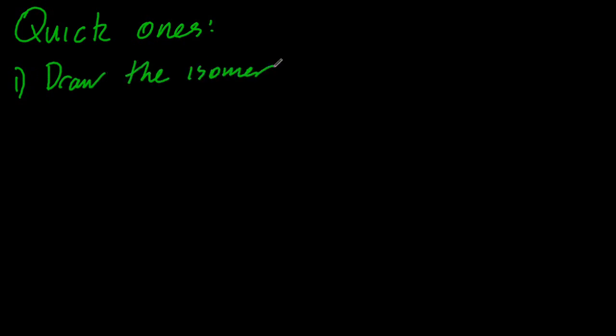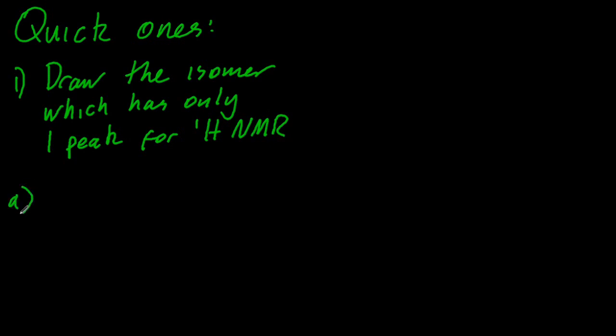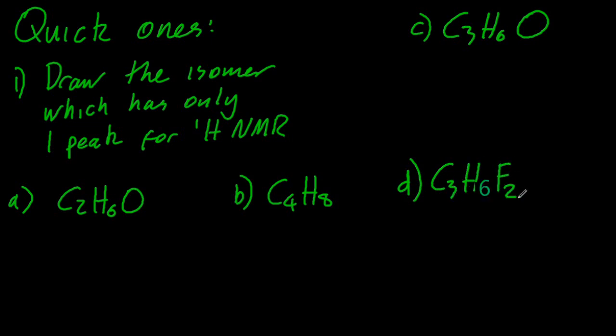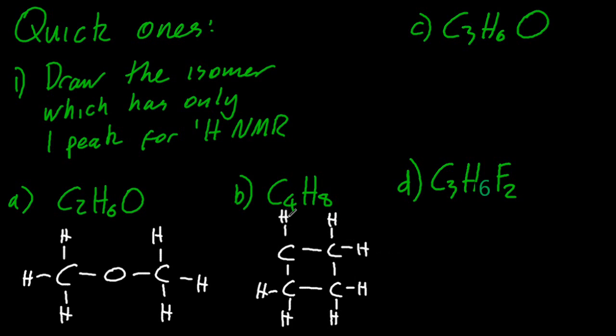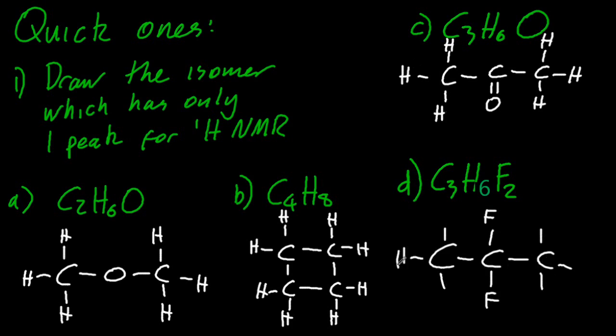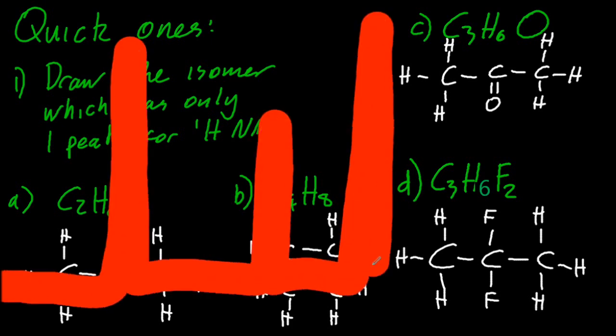Another question. So draw the isomer which has only one peak for H1 NMR. Maybe you want to pause the video once I've written down these four formulas, and have a little think about it. All right, here are the answers. That molecule there, which is an ether. You don't need to know how to name ethers in IB. Cyclobutane, every hydrogen's the same there. Propanone, every hydrogen's the same there. And finally, 2,2-difluoropropane. Every hydrogen environment's the same there.